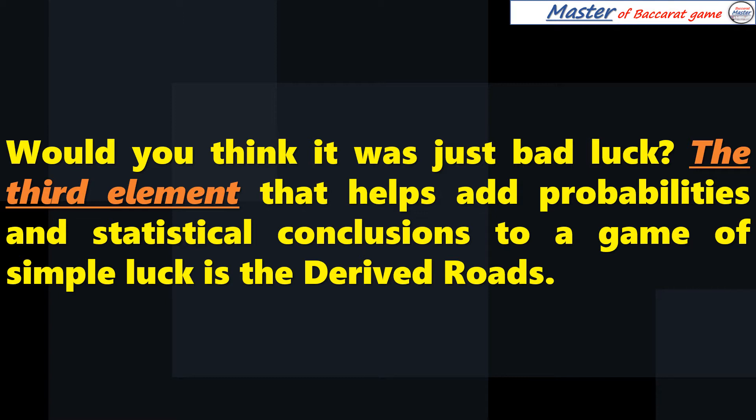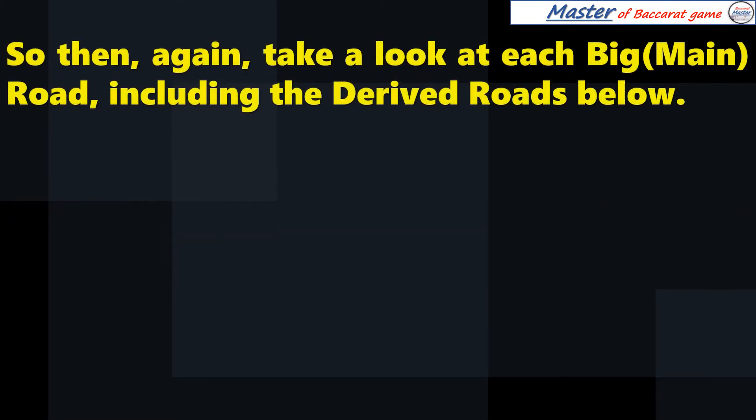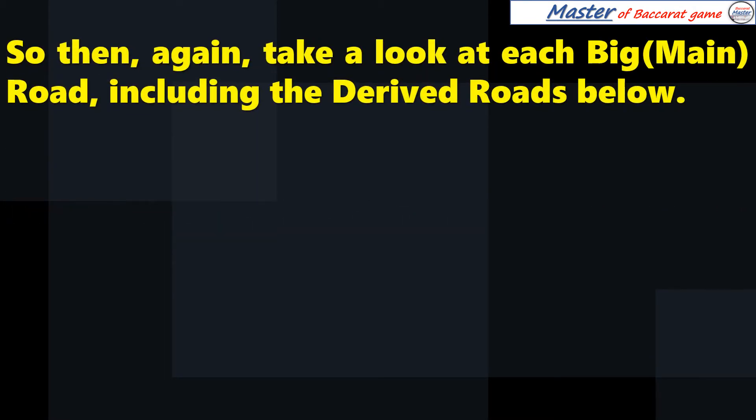The third element that helps add probabilities and statistical conclusions to a game of simple luck is the derived roads. So then, again, take a look at each big main road, including the derived roads below.